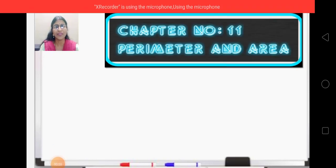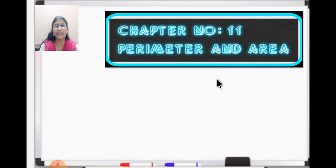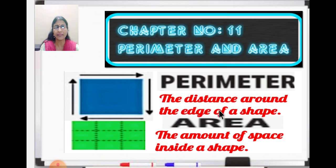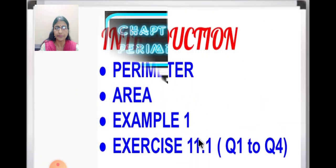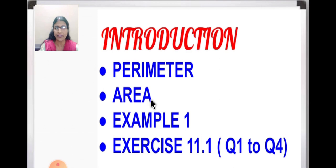Hello children, Sairam. Today we are going to start a new lesson — Chapter 11: Perimeter and Area. You all know about perimeter and area which we have learned in sixth standard; we are just going to revise. Today we'll first understand perimeter and area, then we will do one example, and then Exercise 11.1 from question number 1 to question number 4.